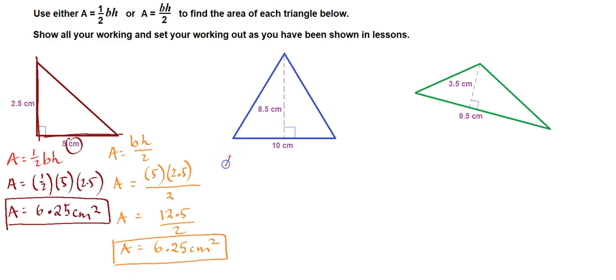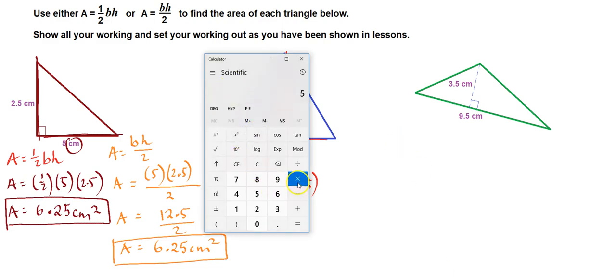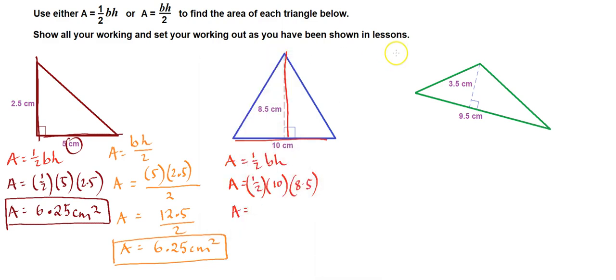We'll start with our formula A equals half the base times the height, and plug in what we know. We have a half, the base is 10, and the height, which is 90 degrees to the base, is 8.5. So let's multiply all that. Half of 10 is 5. 5 times 8.5, let's use our calculator. 5 times 8.5 equals 42.5.